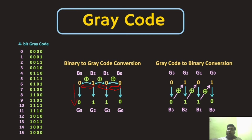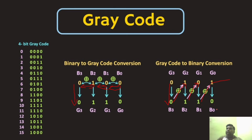For grey code to binary conversion: the MSB stays the same. Then XOR the binary MSB with the grey code's second bit to get the binary second bit: 0 XOR 1 = 1. Then XOR that binary second bit with the grey code's third bit: 1 XOR 0 = 1. Then XOR with the fourth bit: 1 XOR 1 = 0. This is how you convert a grey code to binary.